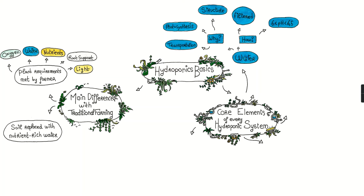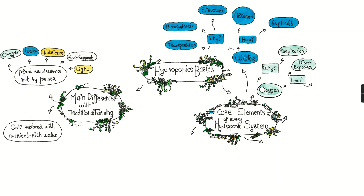Then we have oxygen, which is needed for plant respiration. If there is no oxygen, the plant will drown. This is provided either through directly exposing the roots to air or by managing the level of dissolved oxygen in the water with a water pump, for example.